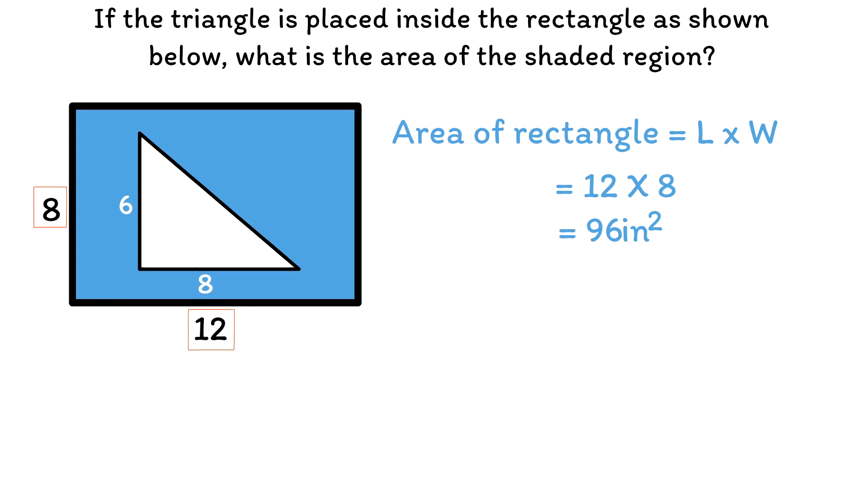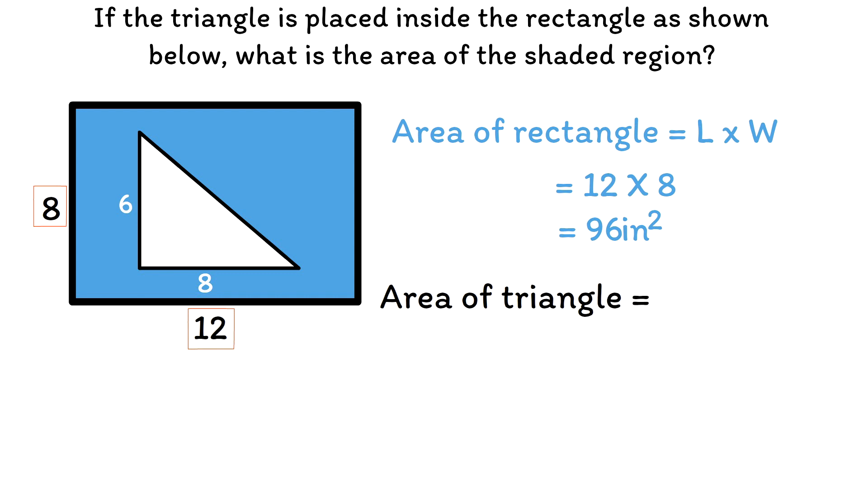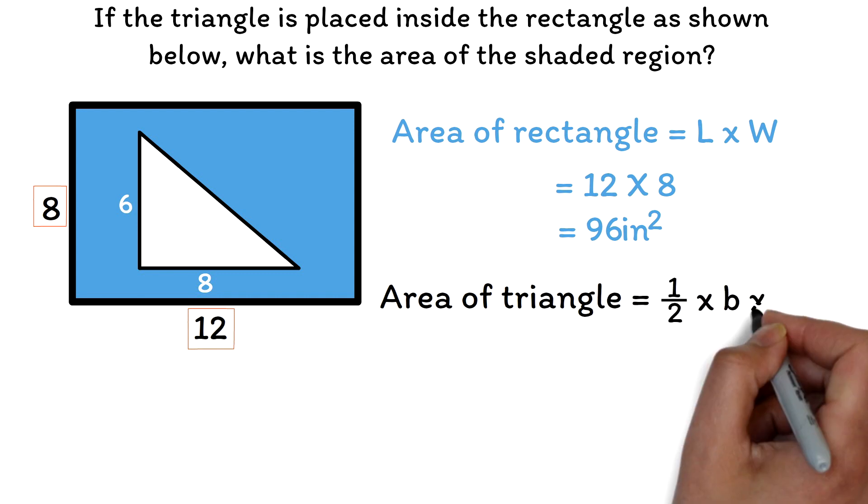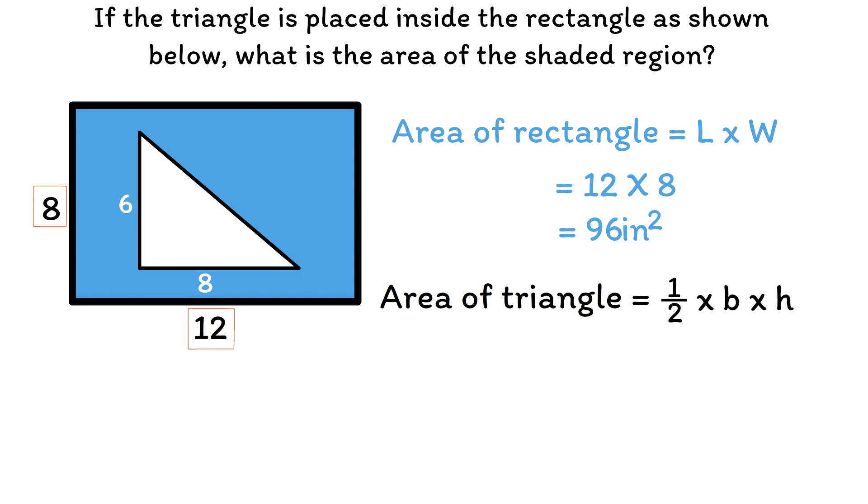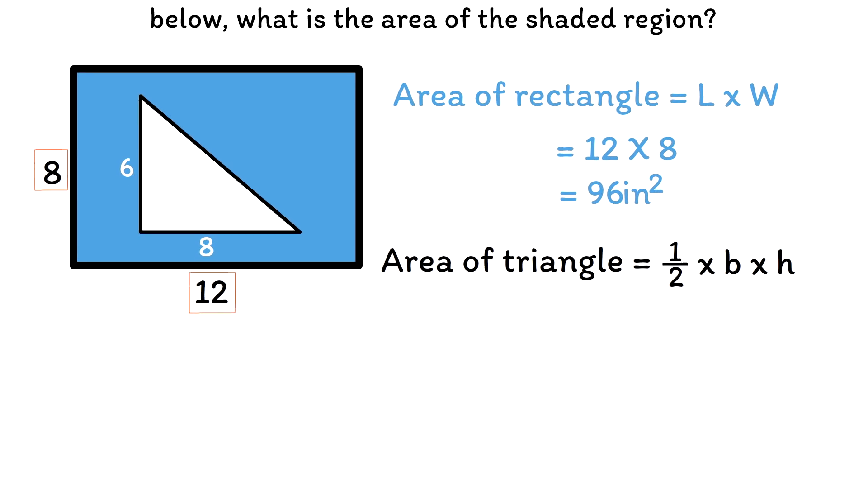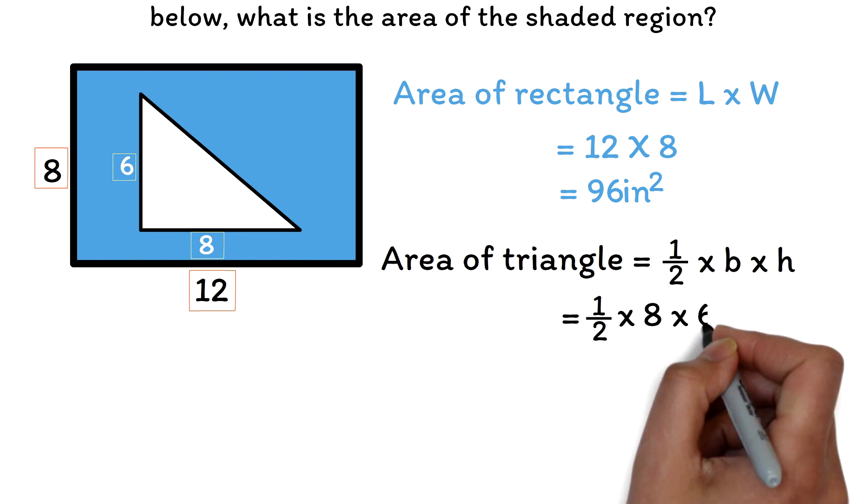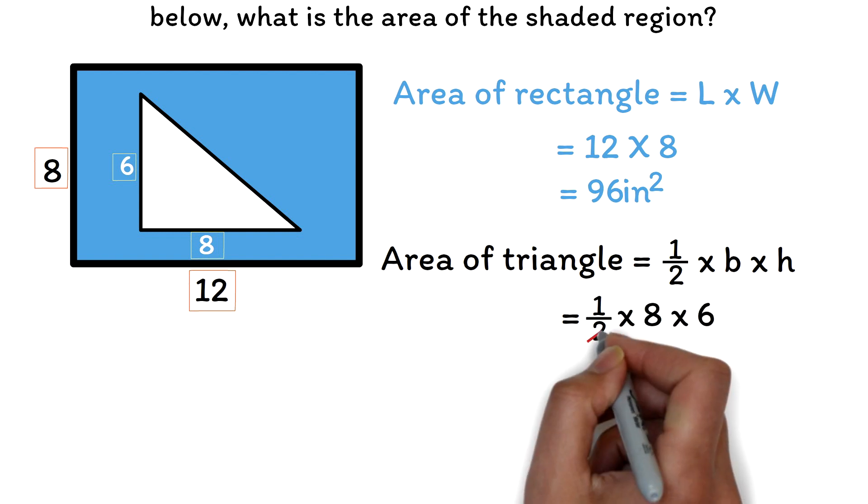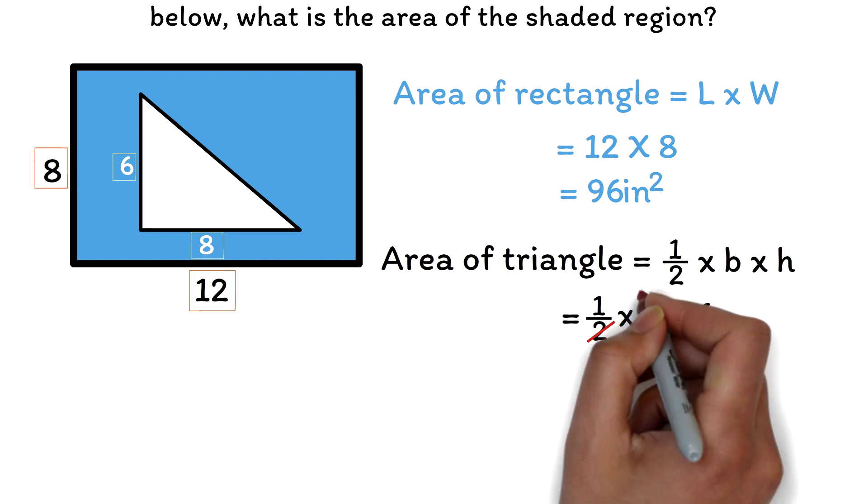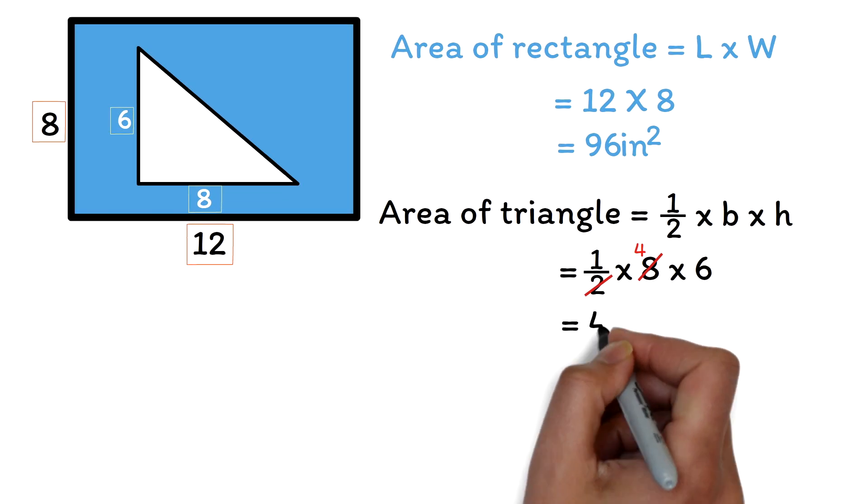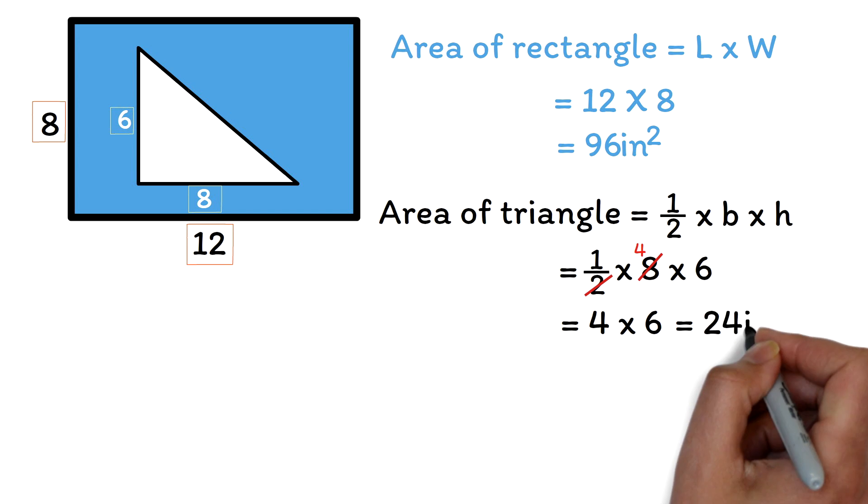Now let's also look at the area of the triangle, and that is half times base times height. With the diagram given, the base of our triangle is 8 and the height is 6. So we can have half multiplied by the base, which is 8 times the height, which is 6. 2 goes into itself once, but into 8 four times. And this gives us 4 times 6, which is 24 inches squared.